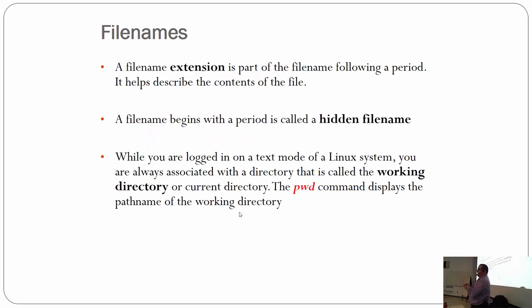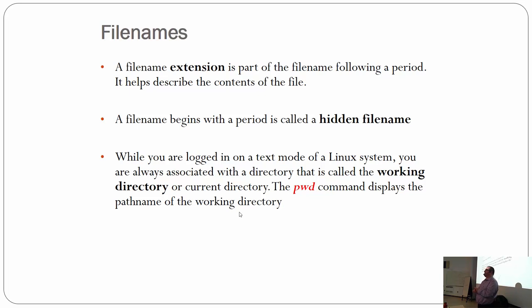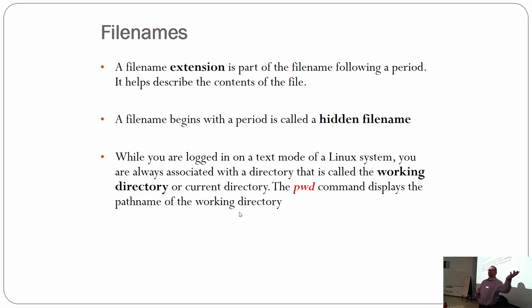A file name extension is the part of the file name that follows the last period. You can have multiple periods, but the extension is what comes after the last one. It helps describe the content of the file. Unlike Windows and Mac, file name extensions have absolutely no meaning on Linux file systems. You can have a file ending in .text that's a complete binary blob and the OS does not care. The software written for Linux will try to determine what kind of file it is on its own.